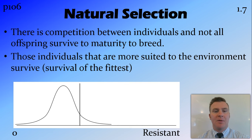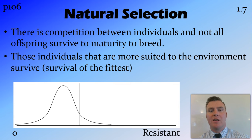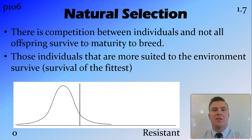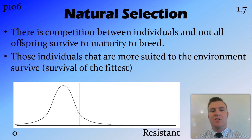The next step in natural selection is that there's competition between the individuals, meaning that not all of them will live to the age where they reach maturity and breed, meaning they don't pass their genetics on to their offspring. Those more suited to the environment are going to be the ones that survive — and this is where survival of the fittest comes in.